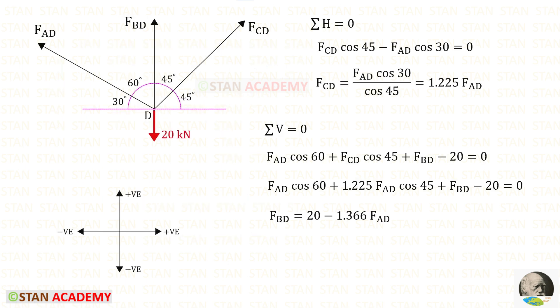Here I have taken joint D and I am going to use the method of joints to find the member forces. In this process, I am going to only use cos theta. This angle will be 90 minus 60, so it will be 30. And this angle will be 90 minus 45, so it will be 45.